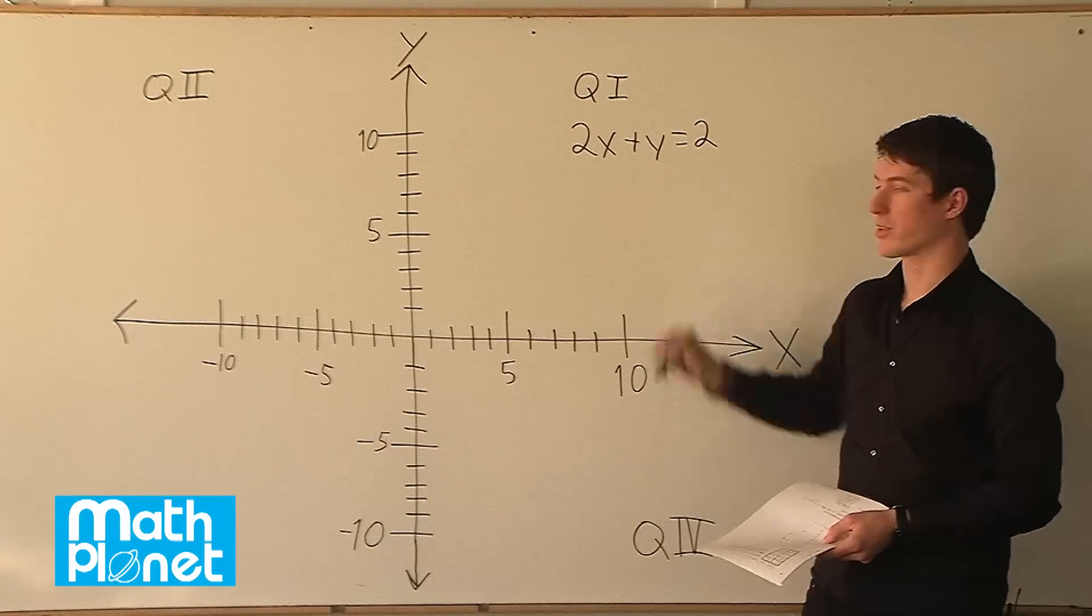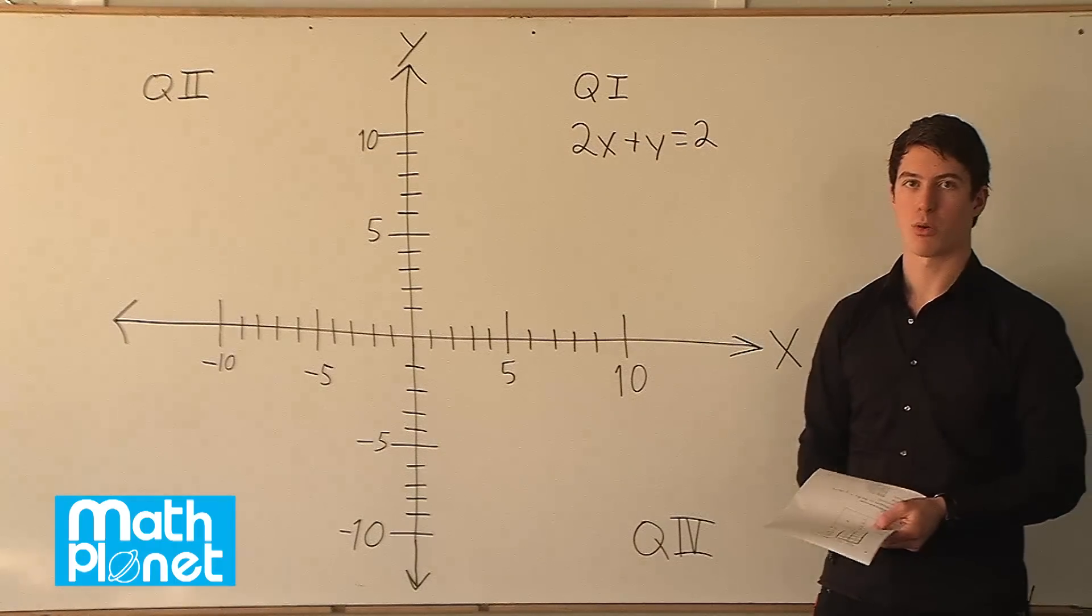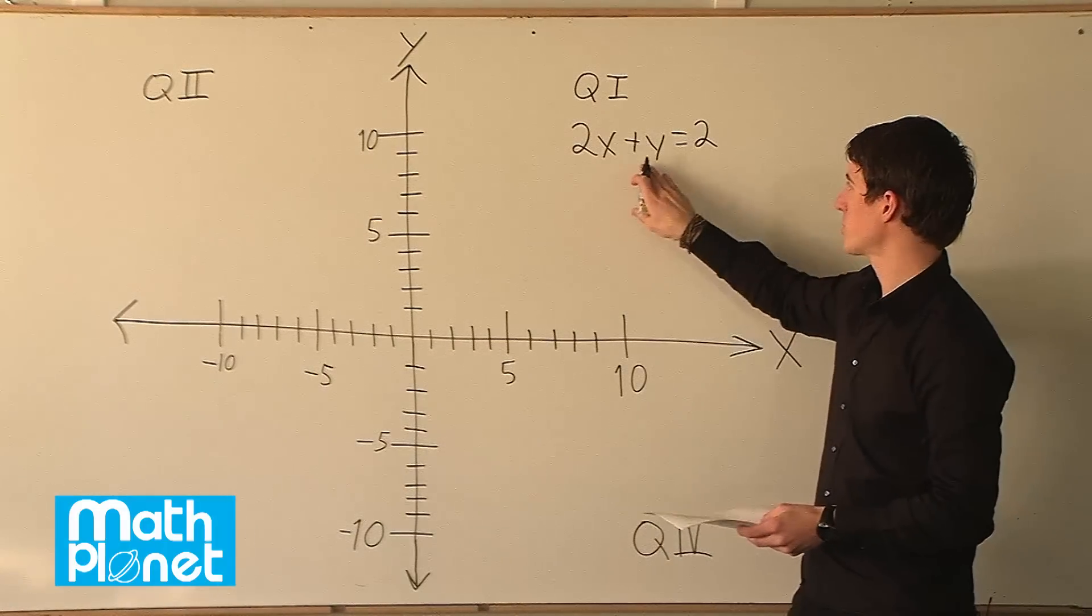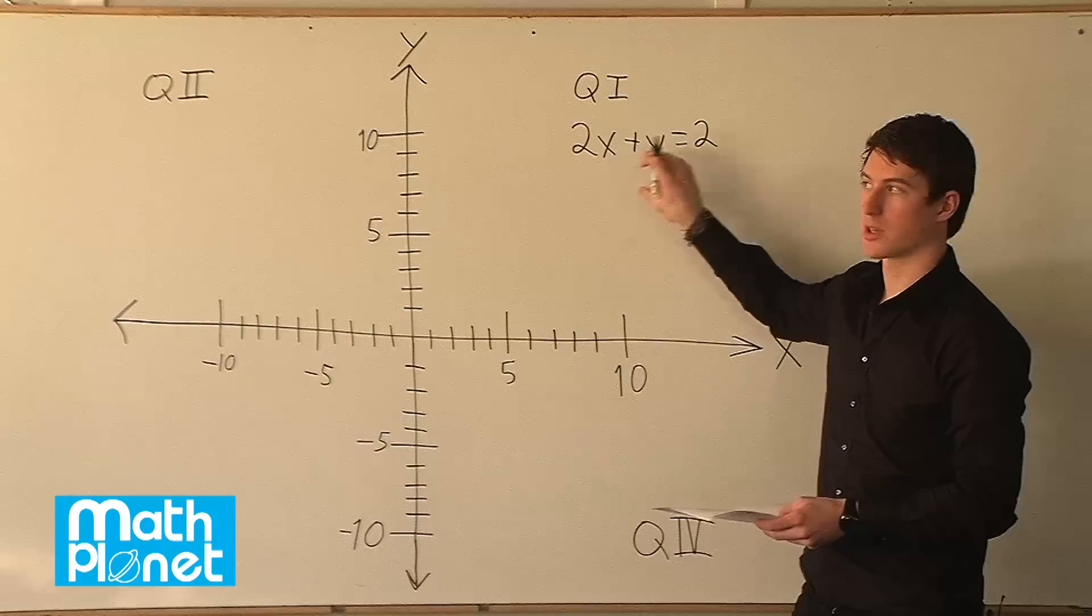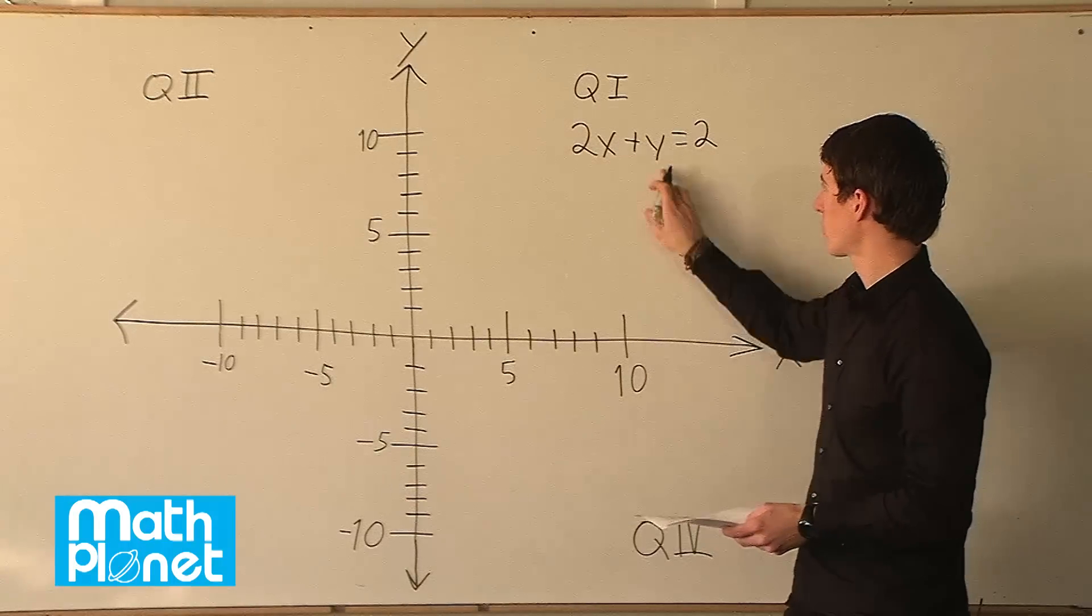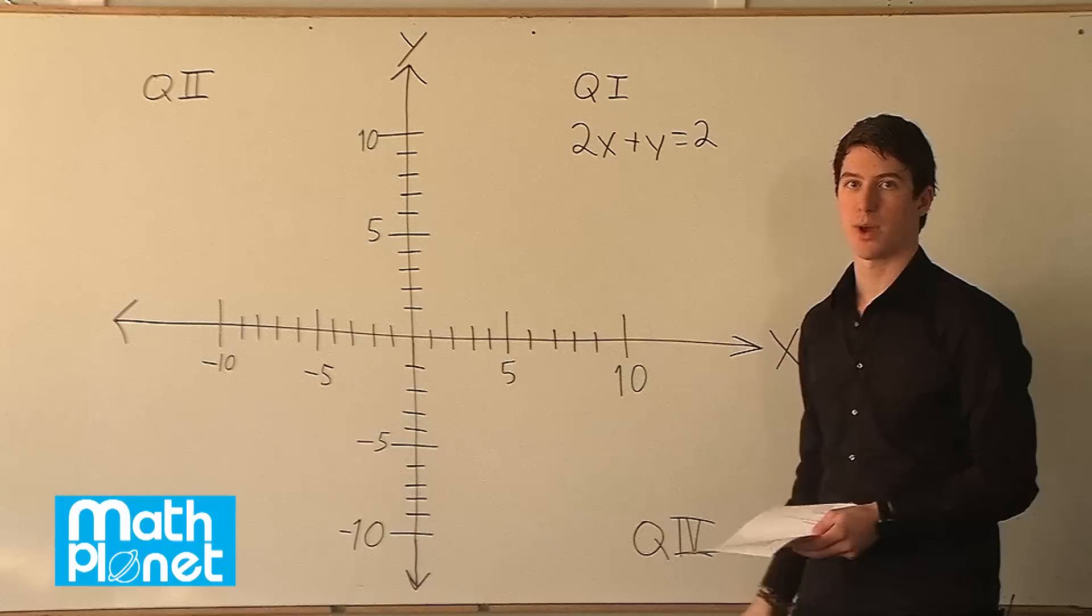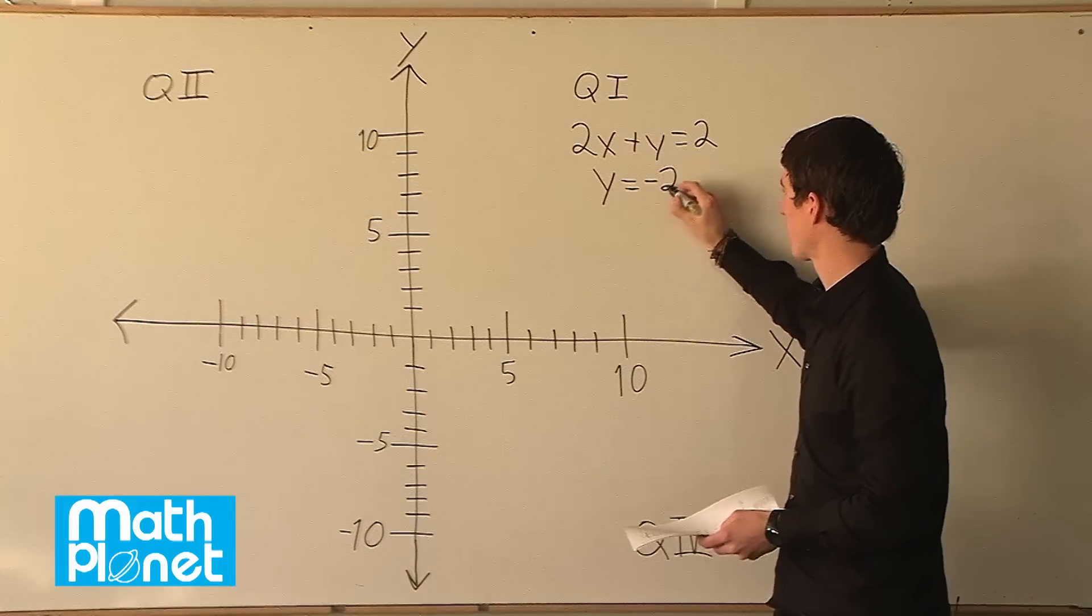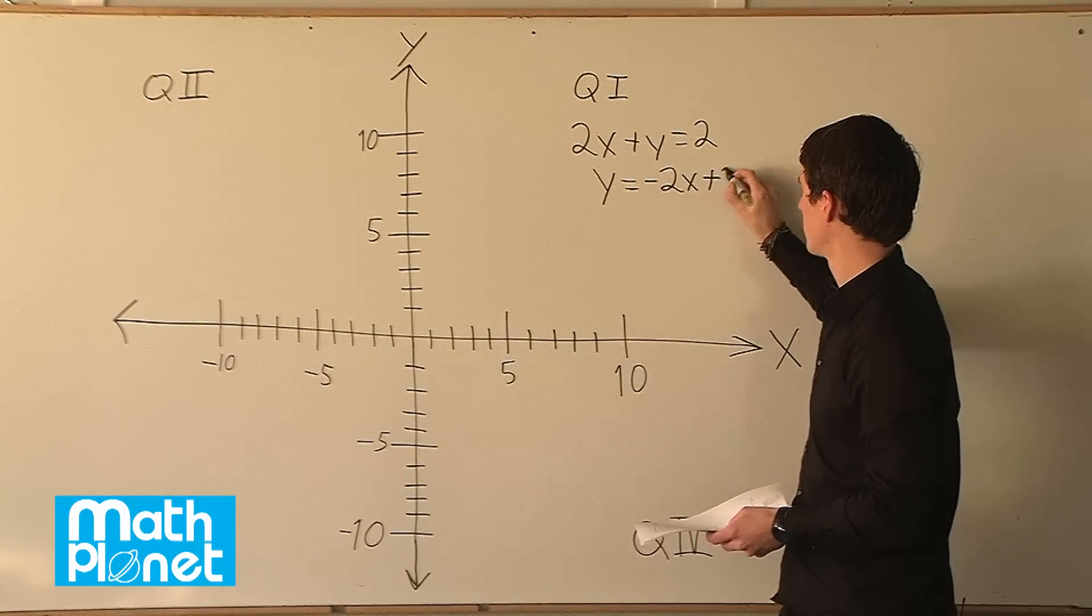So to do that we want to begin by rewriting this in a form that's more familiar to us. We're going to rewrite it in the slope intercept form or the y equals mx plus b form. So to do that we just need to have y on one side of the equation and everything else over here. So if we do that we just need to subtract 2x from both sides. That leaves us with just y equals negative 2x plus 2.